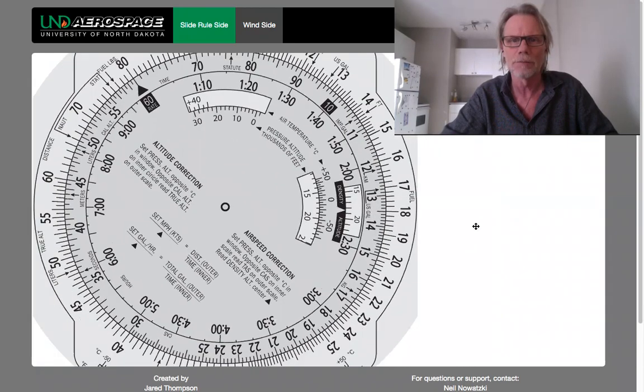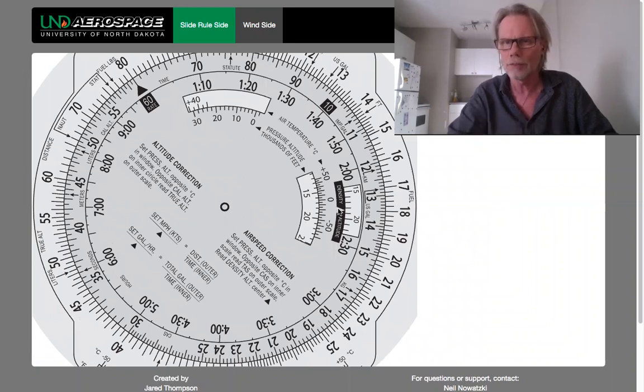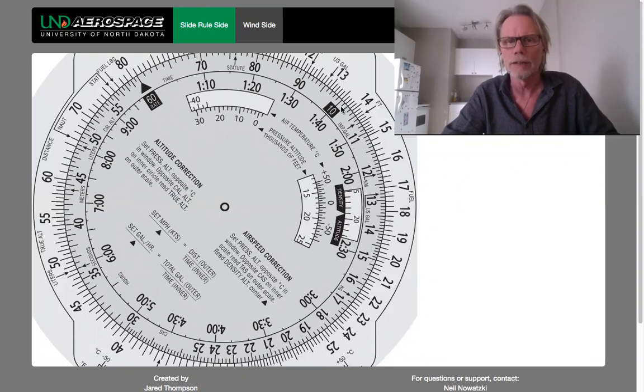So that means now that the outer ring and the inner ring have significance in terms of fuel burn. The outer ring is the amount of fuel in gallons or pounds but we're using gallons in this particular example. The inner ring which is divided into two pieces, the outer section of the inner is simply time in minutes and the inner section is time in hours and minutes. So for example 120 minutes is two hours. Simple.